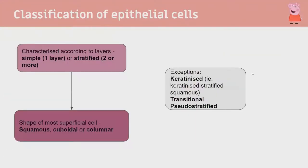Epithelium can be classified in two ways: by layers - simple means one layer, stratified means several layers stacked - and by shape. Squamous is thin and flat like an egg cross-section, cuboidal is cube-shaped, and columnar looks like a column. There are some exceptions we'll cover later.